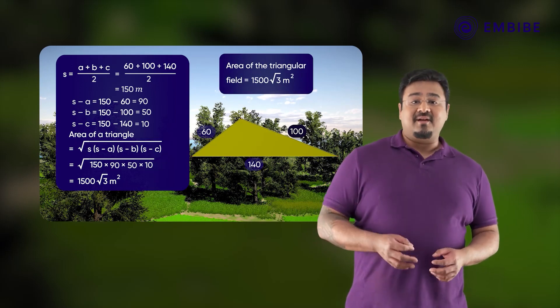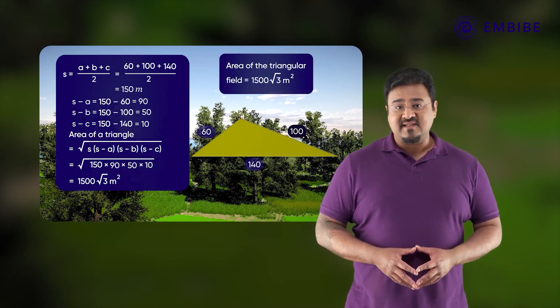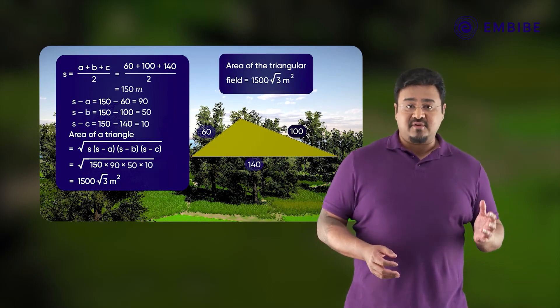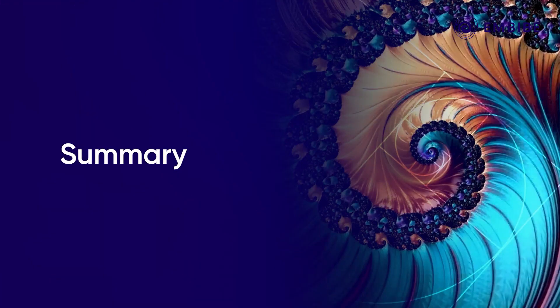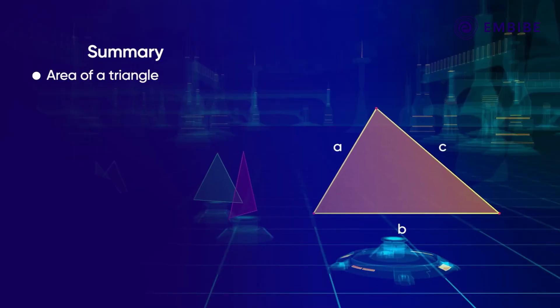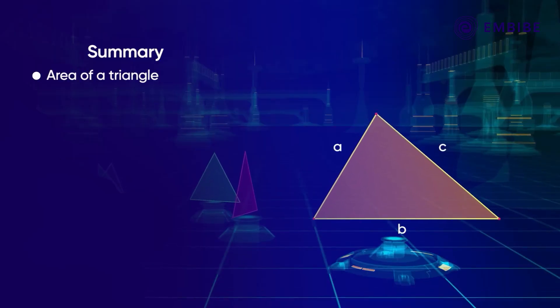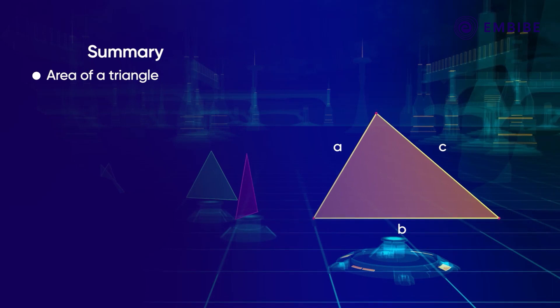Hence, the area of the triangular field is 1500 root 3 meters squared. Let us summarize what we have learned in this video. We have learned Heron's formula to find the area of a triangle whose side lengths are given.